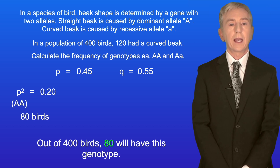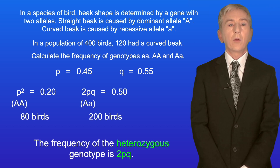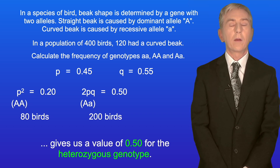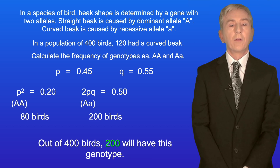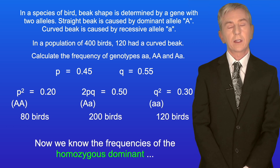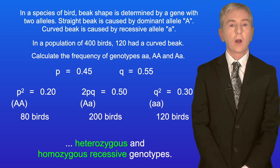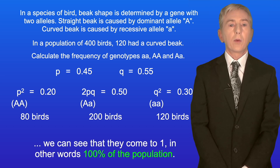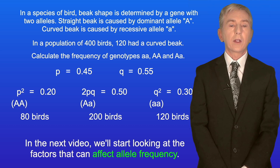So out of 400 birds, 80 will have the homozygous dominant genotype. The frequency of the heterozygous genotype is 2pq: 2 × 0.45 × 0.55 = 0.50, so out of 400 birds, 200 will have this genotype. So now we know the frequencies of the homozygous dominant, heterozygous, and homozygous recessive genotypes. And if we add up these frequencies we can see that they come to 1 — in other words 100% of the population. In the next video, we'll start looking at the factors that can affect allele frequency.